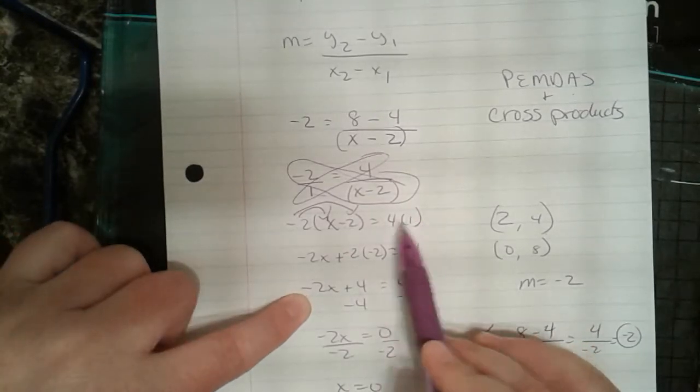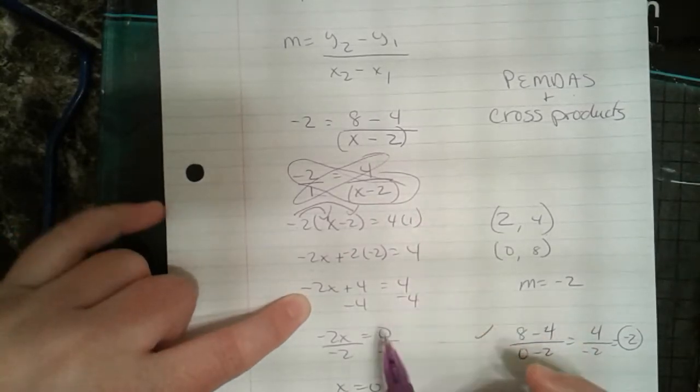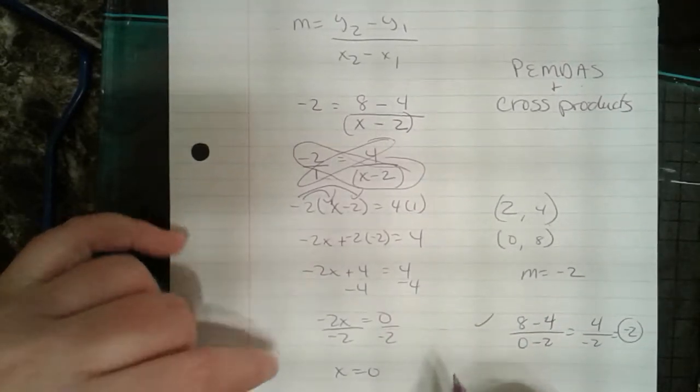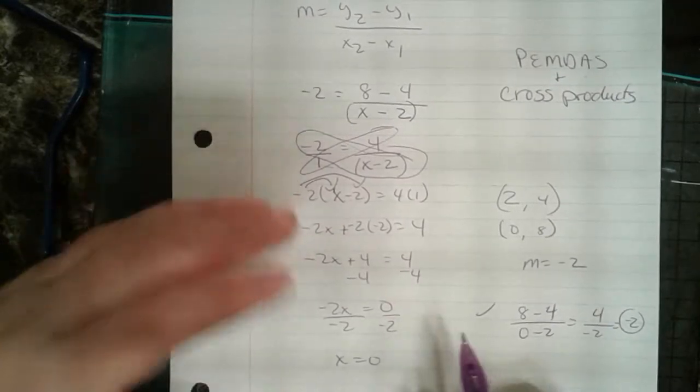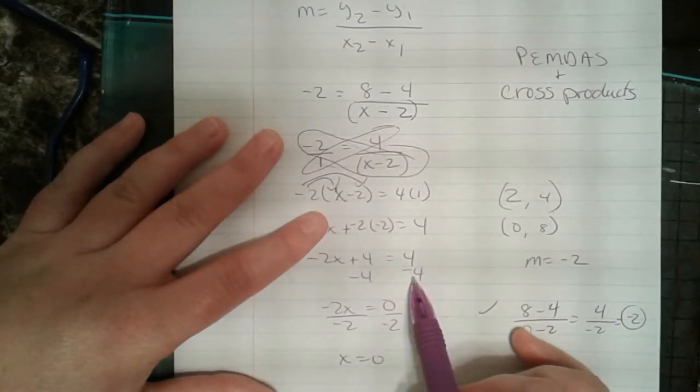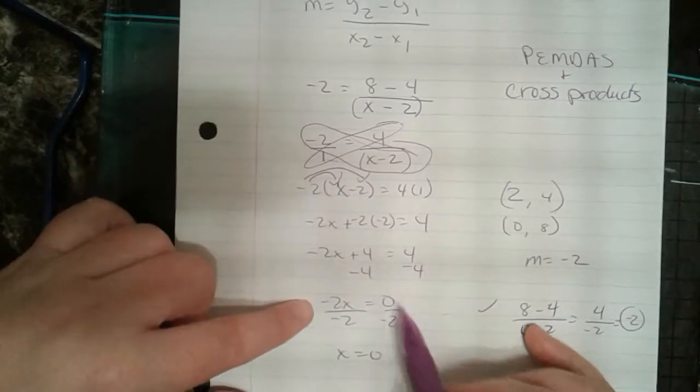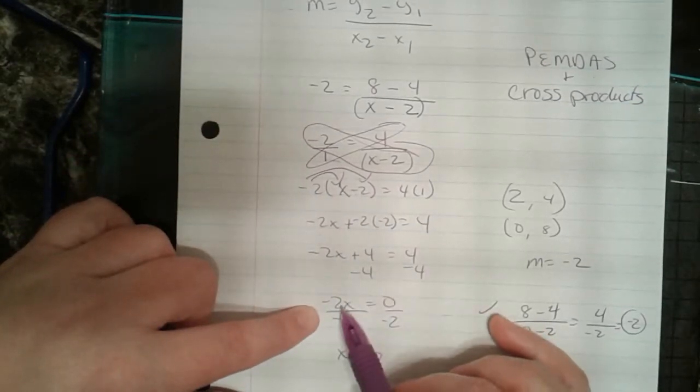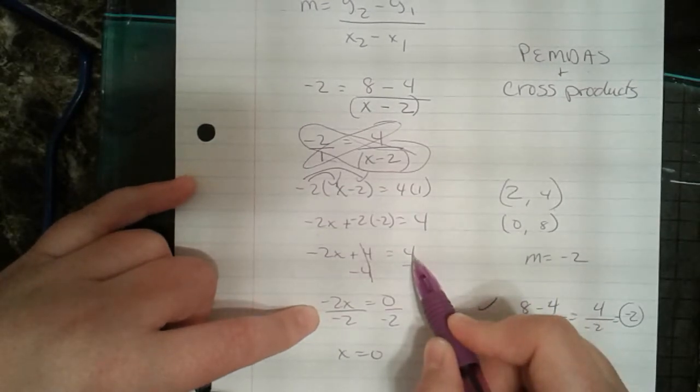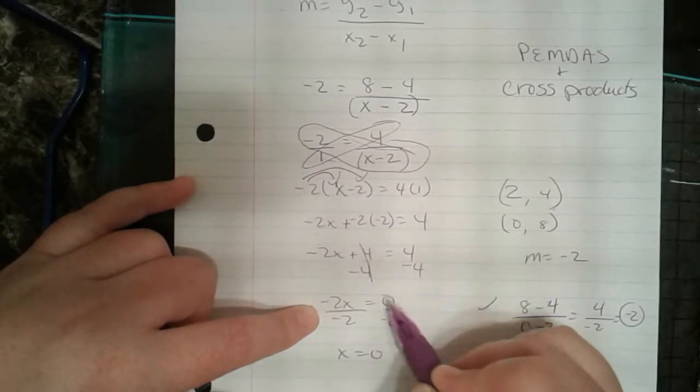So it then comes down to solving it. Using our inverse operations in order to get our x by itself, in order to isolate our x. So how do we do that? We subtract 4 from both sides. Hopefully you guys did that. Came up with negative 2x because these guys cancel out. And these guys actually cancel out too, right? 4 minus 4 is 0.